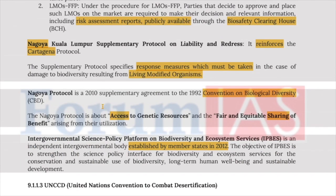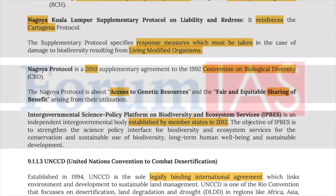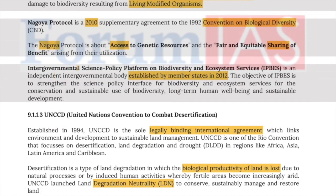The Nagoya Protocol is a 2010 supplementary agreement to the 1992 Convention on CBD, covering access to genetic resources and fair and equitable sharing of benefits. The Intergovernmental Science-Policy Platform on Biodiversity and Ecosystem Services (IPBES) is an independent intergovernmental organization established by member states in 2012, with the objective of strengthening the science-policy interface for biodiversity and ecosystem services for conservation, sustainable use, and long-term human well-being.